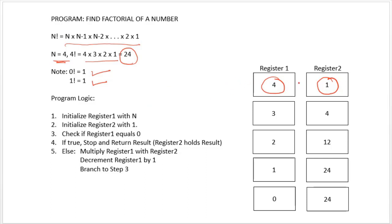If register 1 is not 0, we perform the actual logic: multiply register 1 contents with register 2 and store the result in register 2. Both intermediate and final results are always stored in register R2. After multiplying, we decrement register 1 by 1, and then multiply again.